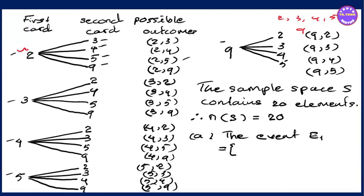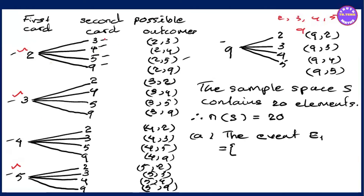Now, if you have two, three, five — those are prime numbers. Two, three, five, two, three, five, three, five, three, five, five.